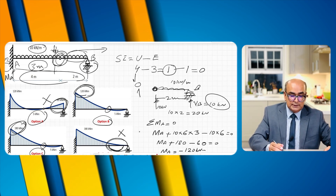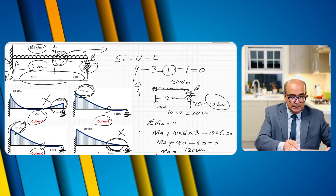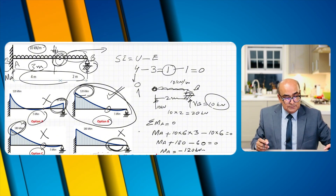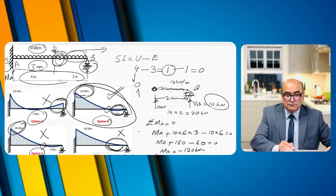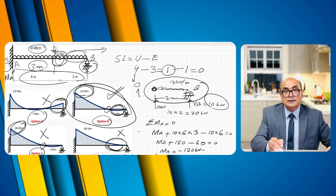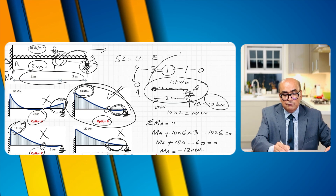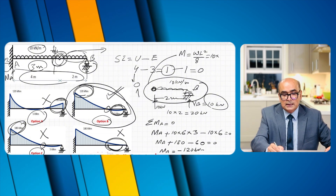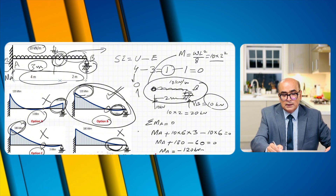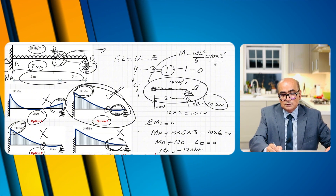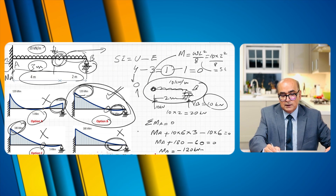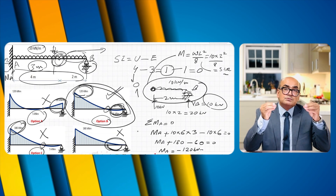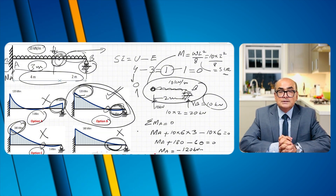So 180 minus 60 equals zero, giving MA equals minus 120 kilonewton meters. The negative sign indicates a hogging moment, which means option B is correct and option C is incorrect. To confirm the 5 kilonewton meter sagging value, using the simply supported beam formula wL²/8: w is 10, L is 2, so 10 times 4 over 8 equals 5 kilonewton meters.